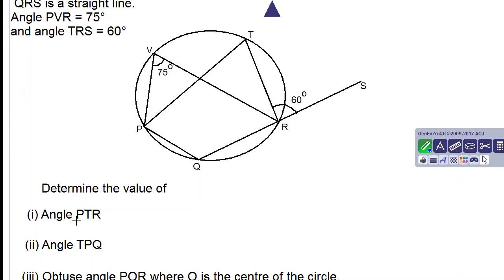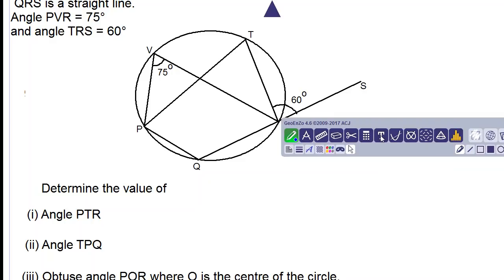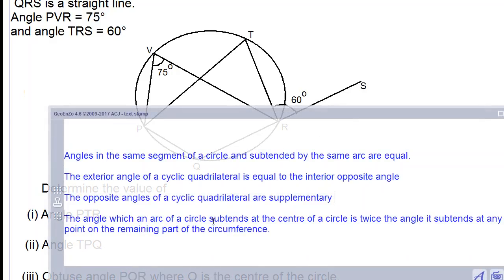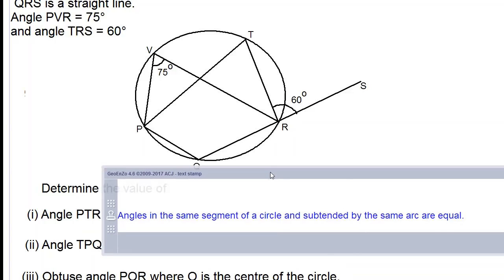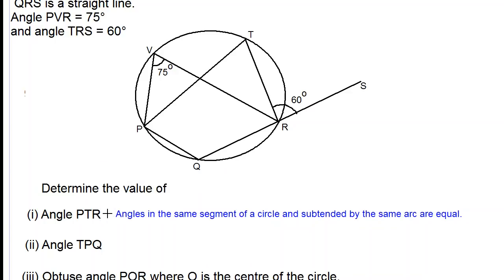We are asked to determine the value of angle PTR so we are using our theorem: angles in the same segment of a circle and subtended by the same arc are equal.